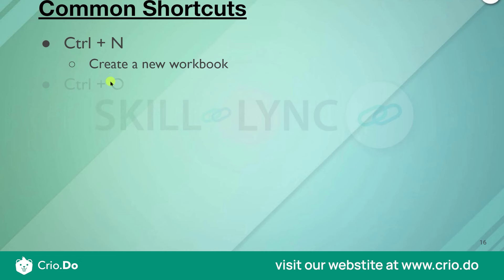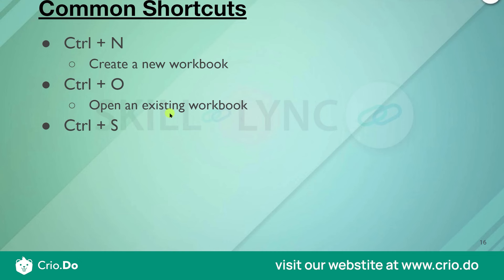The next shortcut key is Ctrl+O. O is for opening an existing workbook — we should say existing workbook, not new workbook. After that we have Ctrl+S, which is for saving the active workbook. So Ctrl+O opens an existing workbook, just as Ctrl+N creates a new workbook.